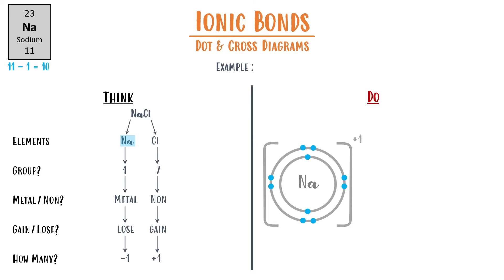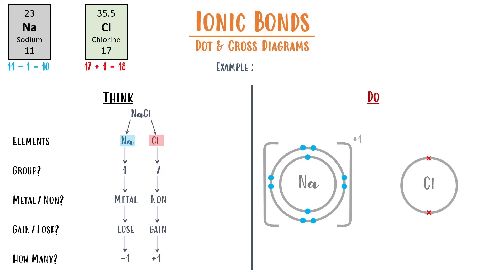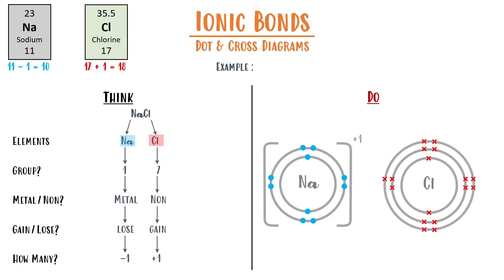Chlorine, on the other hand, started with 17 electrons and it's gained 1, which means it now has 18 electrons in total — 2 on the first shell, 8 on the next, and then the 7 that it originally had. We're going to use a dot this time to represent the additional electron it's gained. Again, square brackets, and in this case it will be a −1 charge because it's gained 1 negative electron.